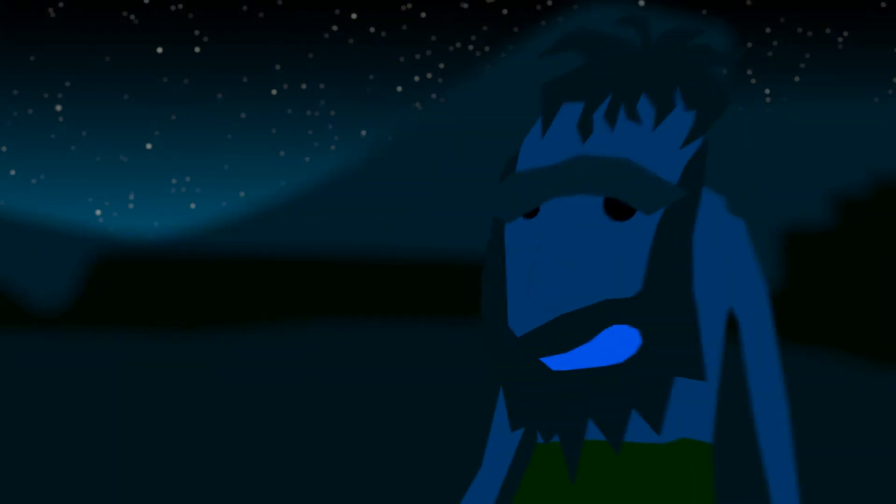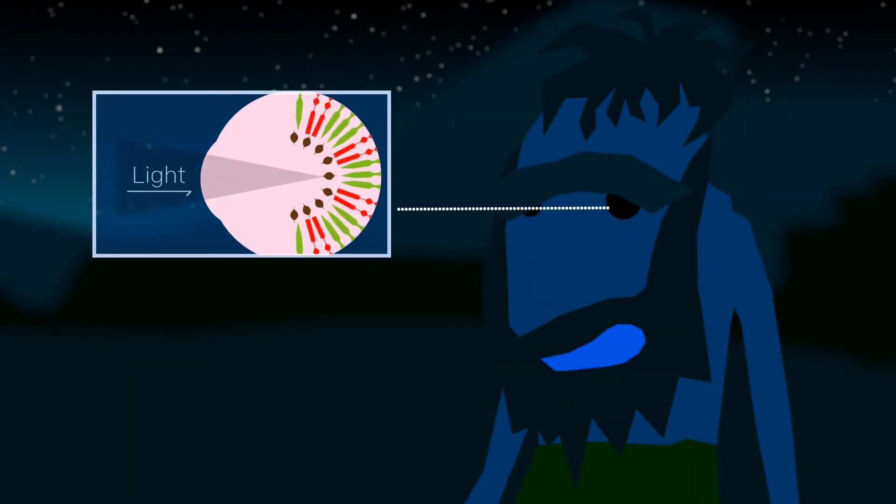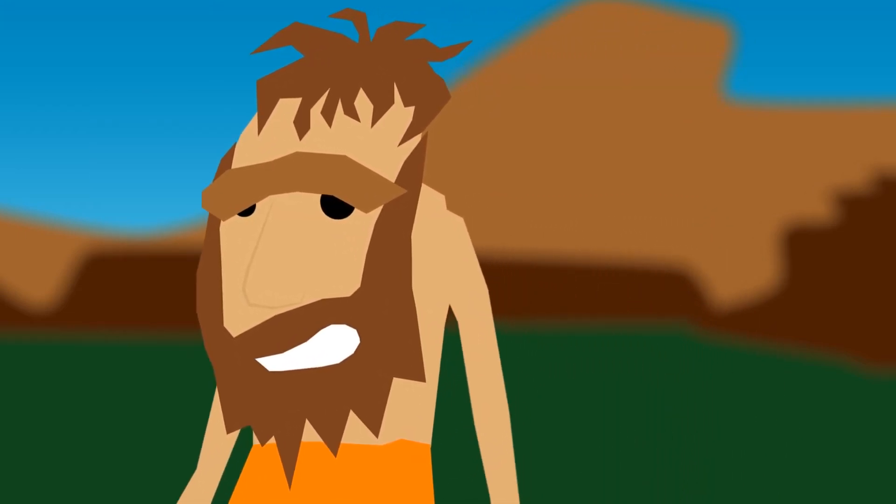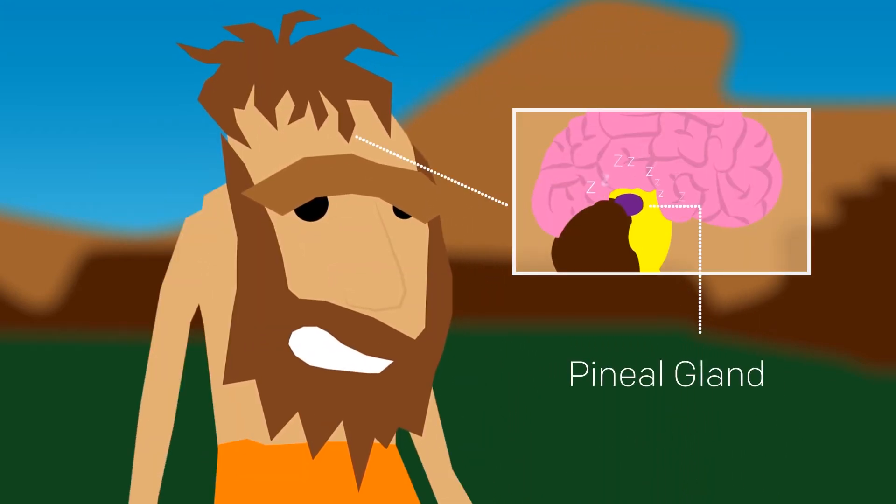Research has recently pointed out that alongside the rods and cones everyone is familiar with, our ancestors also developed these special receptors that are sensitive to light color. When the receptors sense light that is more bluish, the brain commands less melatonin production.